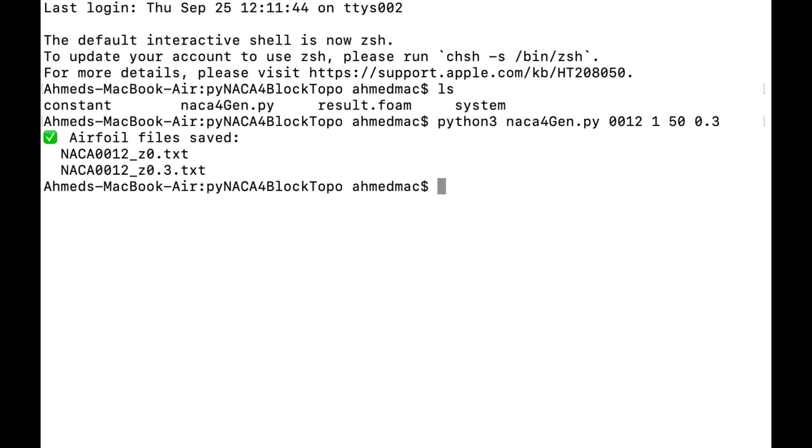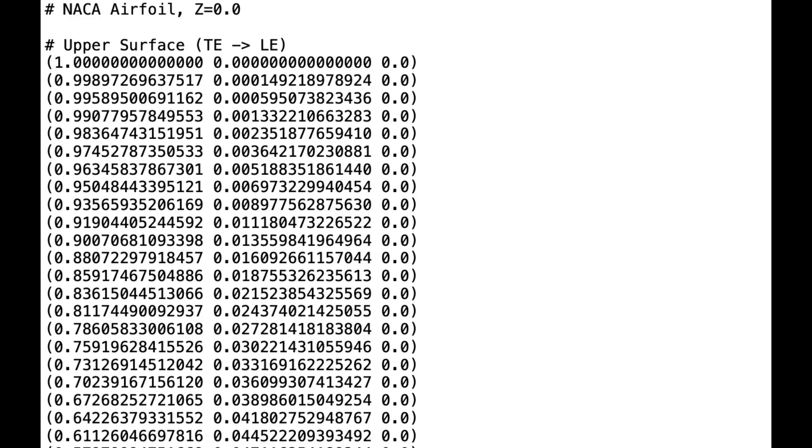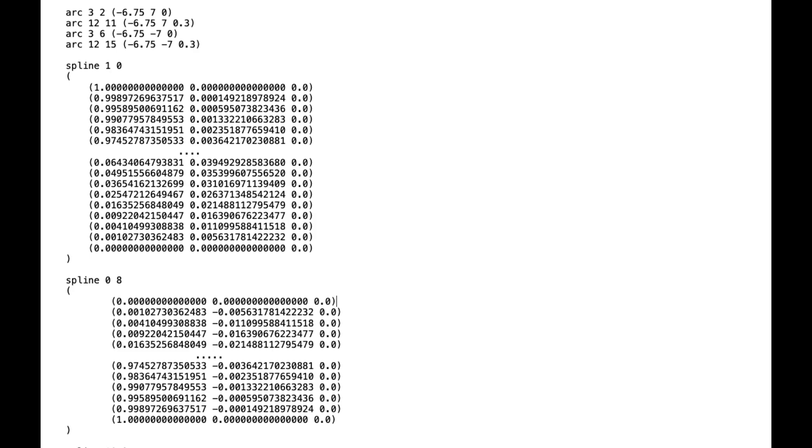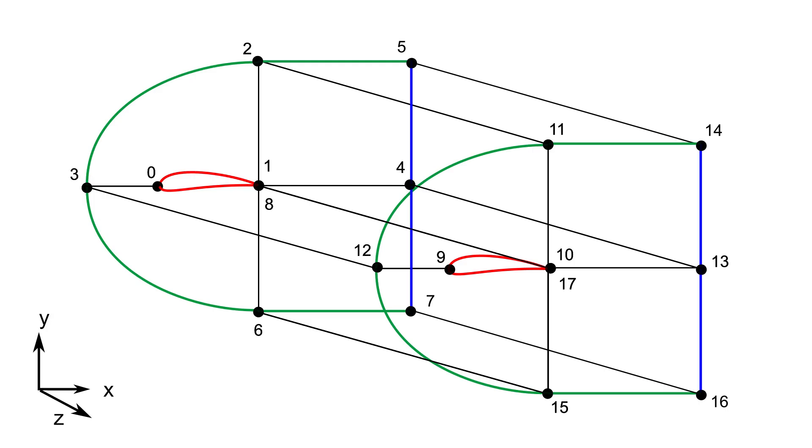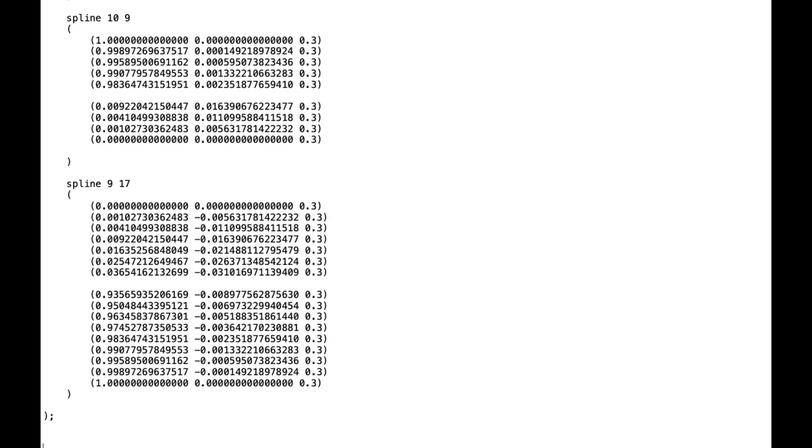Containing all coordinates needed for defining the airfoil spline. Open the generated text files in the project folder. Copy the upper spline points and paste them into spline between vertex 1 and vertex 0 following the correct spline direction. In this case from trailing edge to leading edge, from vertex 1 to vertex 0. Repeat the process for the lower edge between vertex 8 and 0, and then do the same for the other two splines at z equal 0.3.